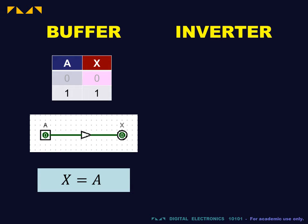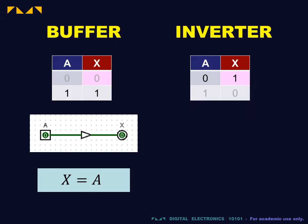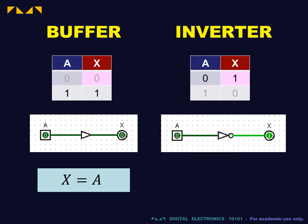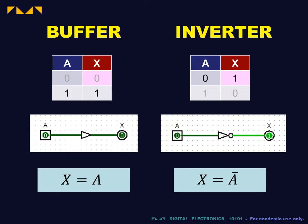For the inverter, the output is false if and only if the input is true. The inversion is represented by a small open circle at the output called a bubble. The Boolean expression reads x is equal to a bar.